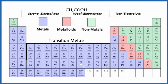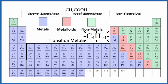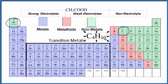Let's talk about non-electrolytes. Looking at the periodic table divided into metals, metalloids, and nonmetals — for substances that aren't acids or bases, if we have only nonmetals, it's considered a molecular compound. In general, molecular compounds are non-electrolytes. For example, CH4: we find carbon and hydrogen, and they're both nonmetals. Since we have all nonmetals and it's not an acid or a base, CH4 is going to be a non-electrolyte.